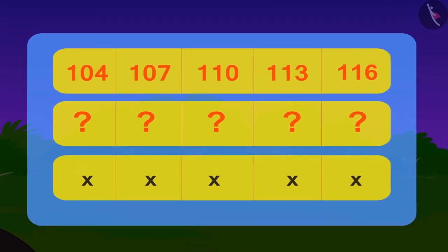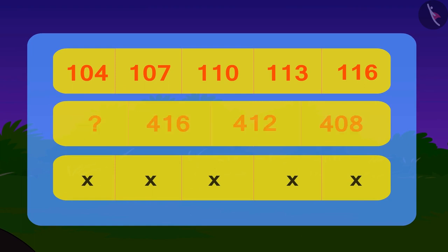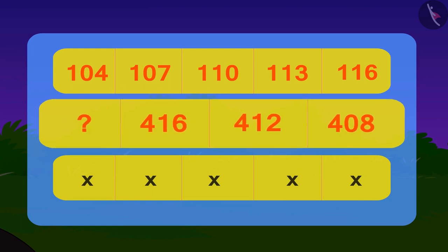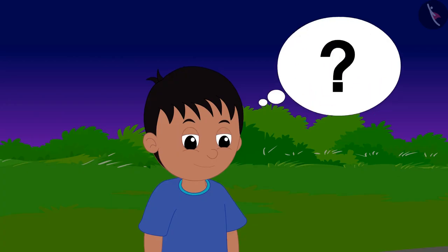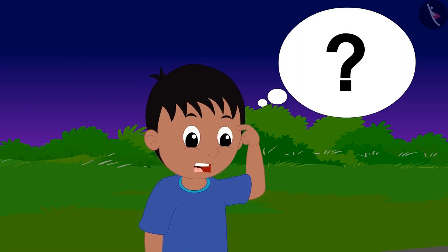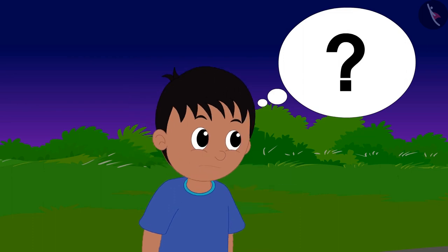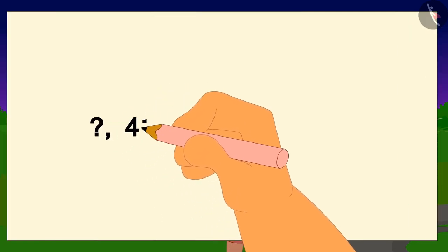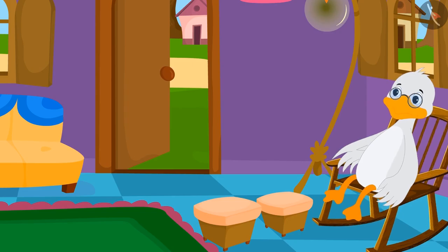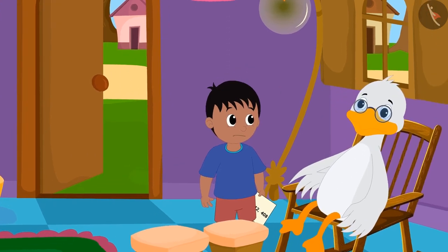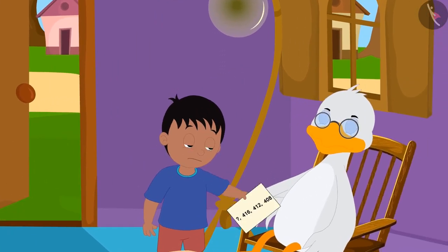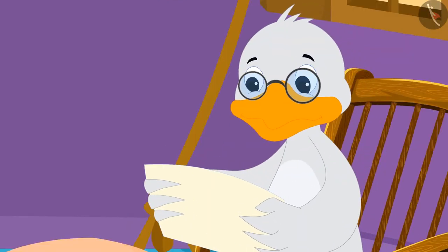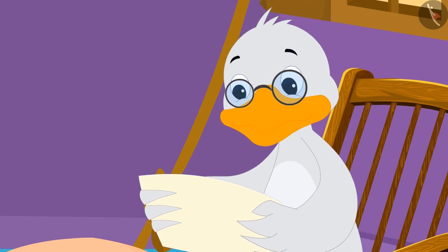Let's see what the next code from the alien looks like. The next code given by the alien looks something like this. Raju says: I cannot solve any of these numbers using Batak Uncle's trick — I have to go back to Uncle again! So Raju once again wrote the code on a paper and ran off to Batak Uncle.